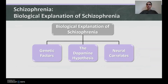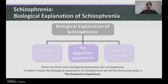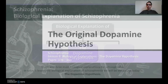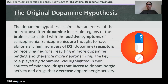Most modern health professionals believe schizophrenia is at least partly biological in origin. Biological explanations cover: genetic vulnerability, the role of the neurotransmitter dopamine — which is today's focus, the dopamine hypothesis — and the neural correlates of schizophrenia. These three explanations are interrelated: if schizophrenia is genetic, those genes lead to biological differences such as abnormal dopamine levels and abnormal brain structures. Today we're looking at the dopamine hypothesis specifically.